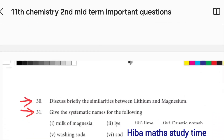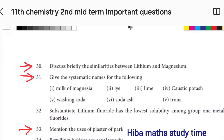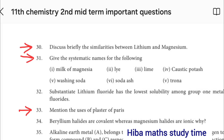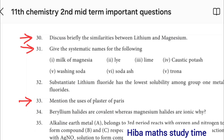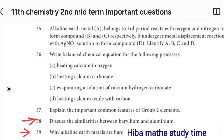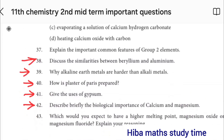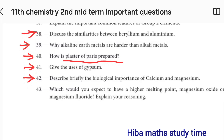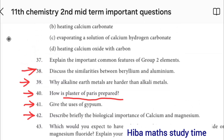You will study the R sub-division. Discuss briefly the similarities between lithium and magnesium — question 31. Give the systematic names for the following. Discuss the similarities between Beryllium and Aluminium. Why are alkaline earth metals harder than alkali metals? How is Plaster of Paris prepared? This is the main topic of Plaster of Paris. Give the uses of gypsum. Describe briefly the biological importance of calcium and magnesium — these are very important questions.